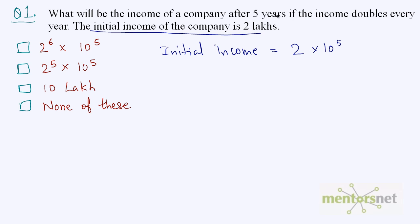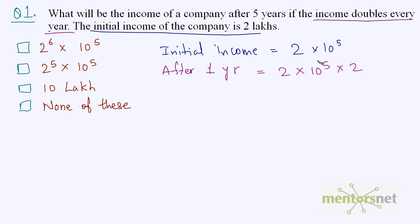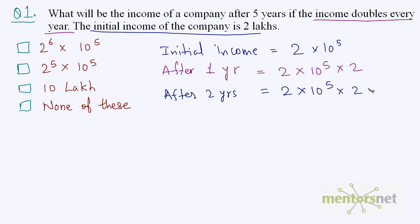We have been given that the income of this company doubles every year. So after 1 year the income will be 2 into 10 raise to power 5 times 2 — you multiply by 2 to double the term. After 2 years the income of the previous year will be multiplied by 2 again, so it will be 2 into 10 raise to power 5 into 2 into 2.